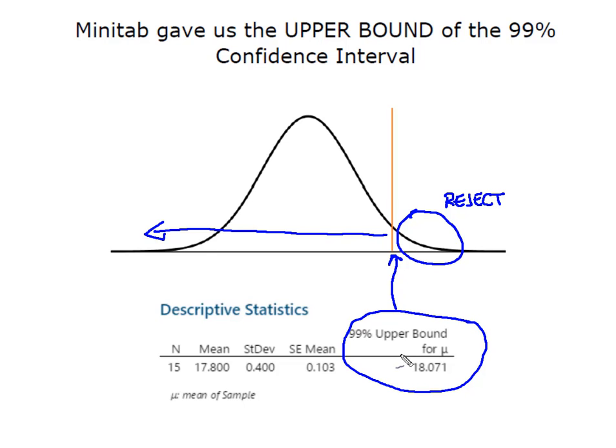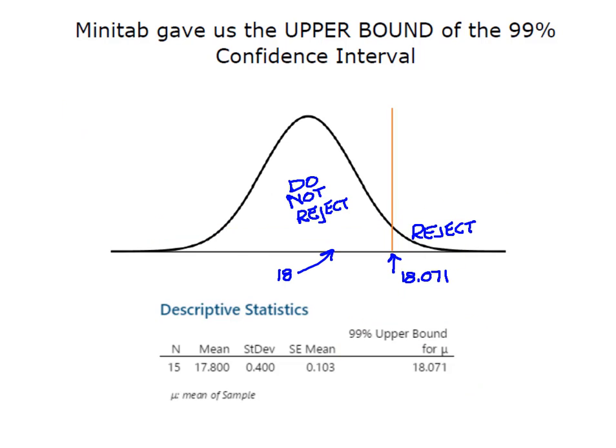So remember in Minitab, when you run a test and Hₐ is less than, Minitab is always going to give you this upper boundary. If I had run Hₐ greater than, it would give me my lower boundary. Because remember when I'm looking at less than, I'm looking for this part of the curve to support my claim. So I'm going to compare my hypothesized value, the mean which was 18, to the upper boundary of the confidence interval for μ.